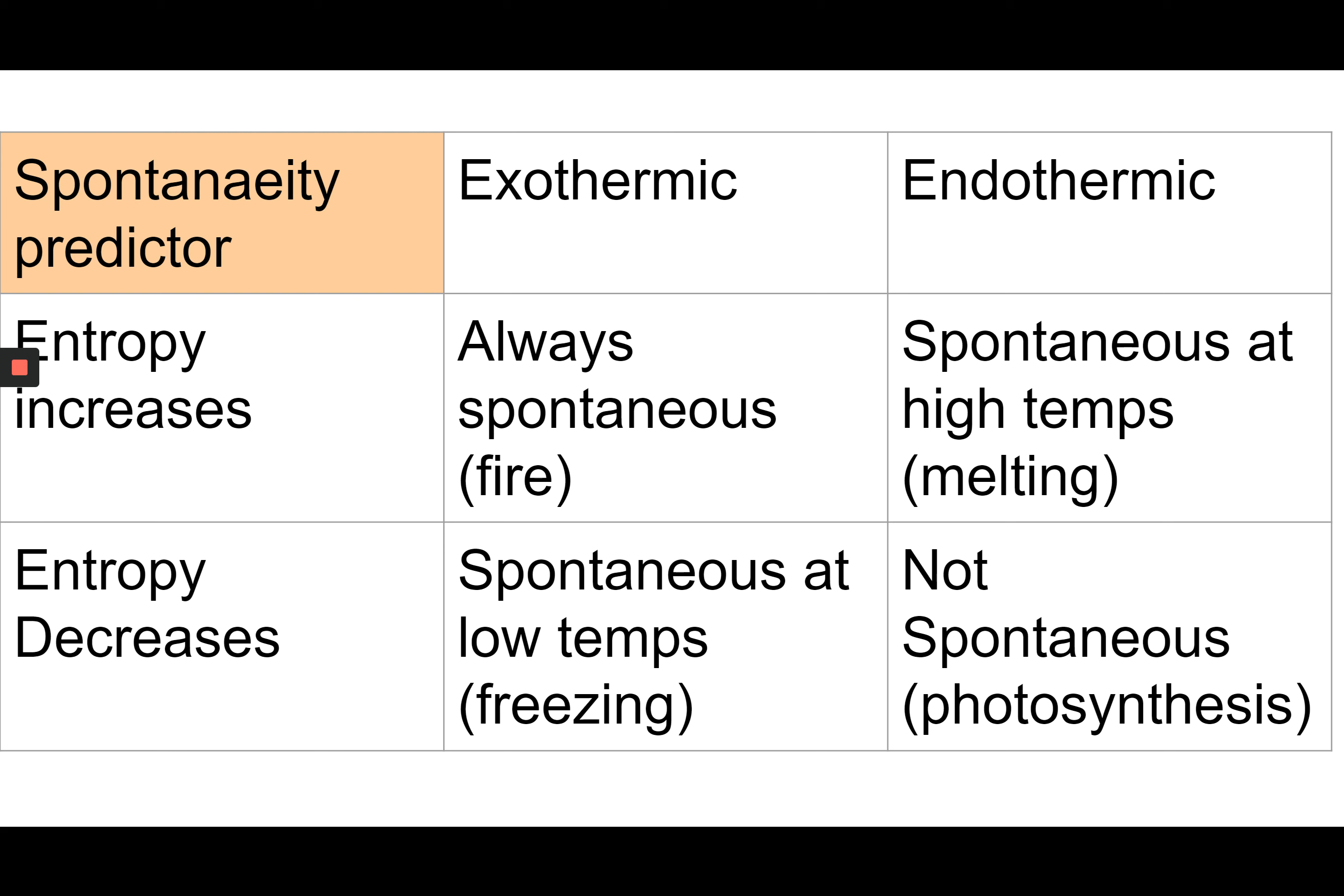If a reaction is exothermic but creates lower entropy, an example that would be freezing, heat is given off, but things become more orderly.